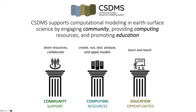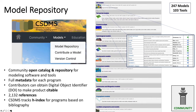CSDMS works in three areas to support your work: community, computing, and education. On the community side, CSDMS runs a model repository — an online, open, accessible database of model programs and tools written by and shared with the community. It includes rich metadata for each tool, pathways to add a digital object identifier to make your products citable, and references — currently over 2,000 in the database. CSDMS will even track an H-index for individual models to show how widely embedded they are. Currently there are around 350 models and tools, steadily growing.